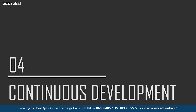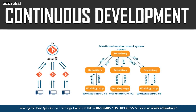The first phase of the DevOps lifecycle is continuous development. This phase involves planning and coding of the software application's functionality. There are no tools for planning as such, but there are a number of tools for maintaining the code. The vision of the project is decided during the planning phase, and then the actual coding begins. The code can be written in any language but is maintained using version control tools. The most popular tools used are Git, SVN, Mercurial, CVS, and Jira.